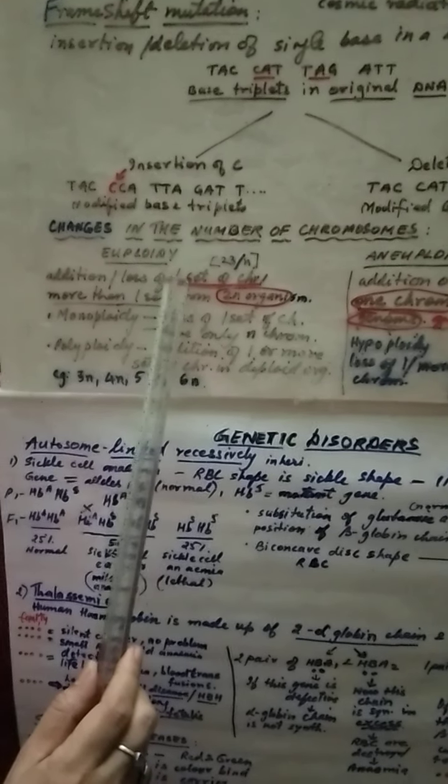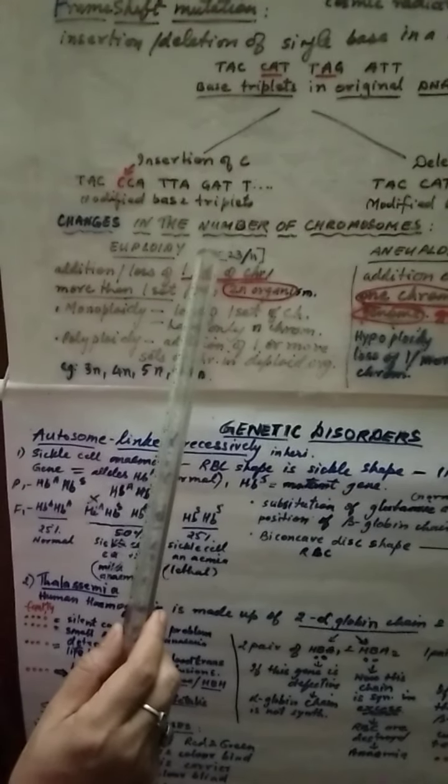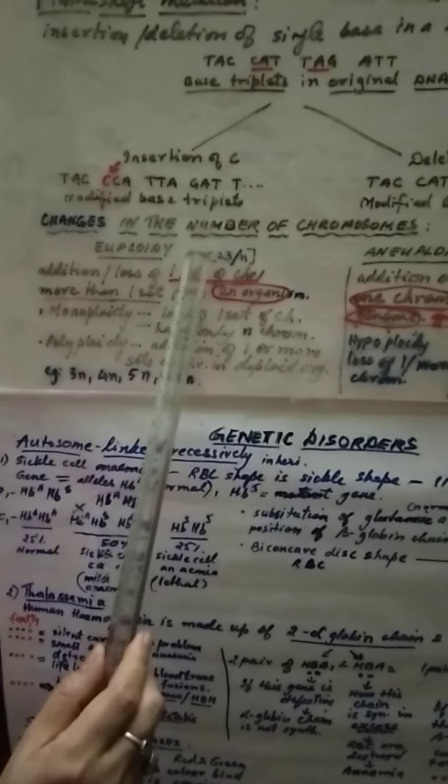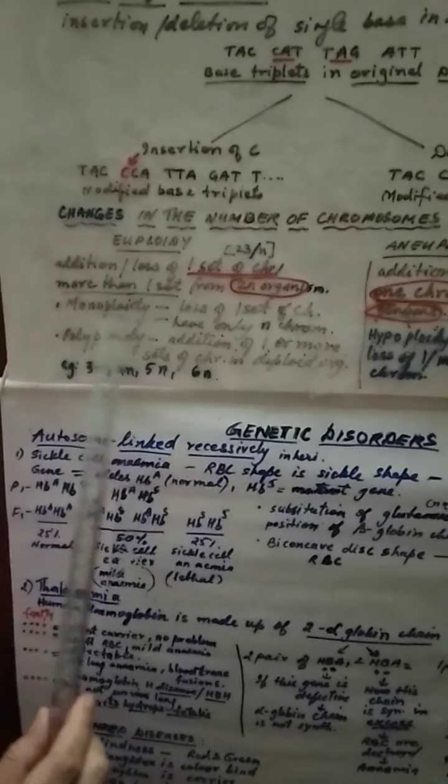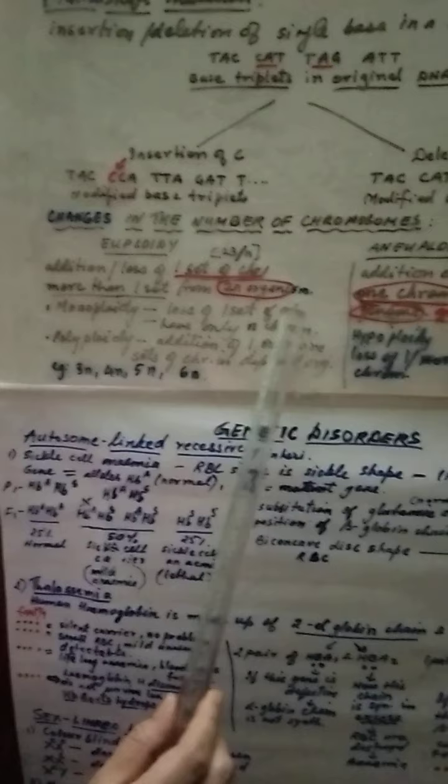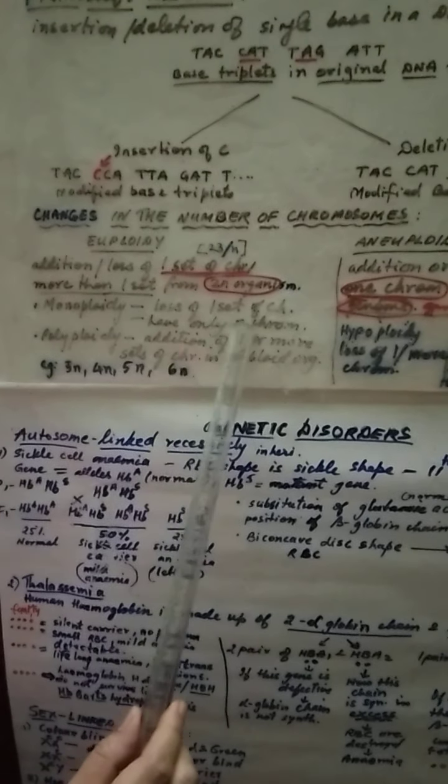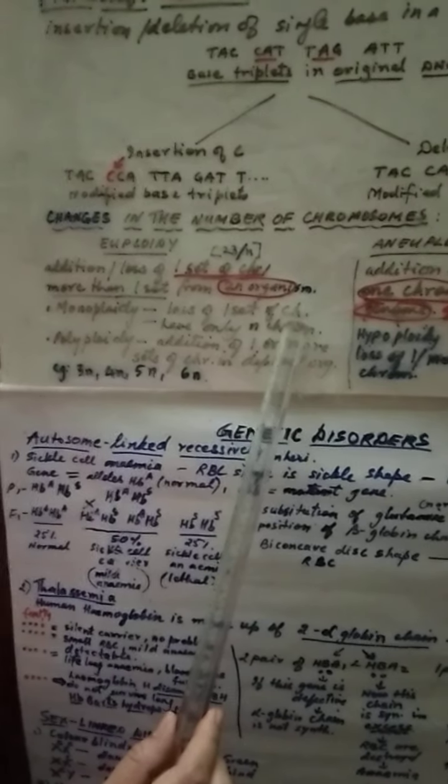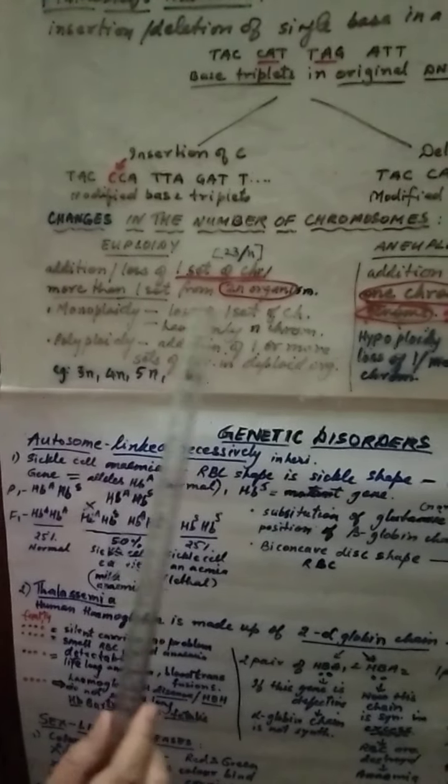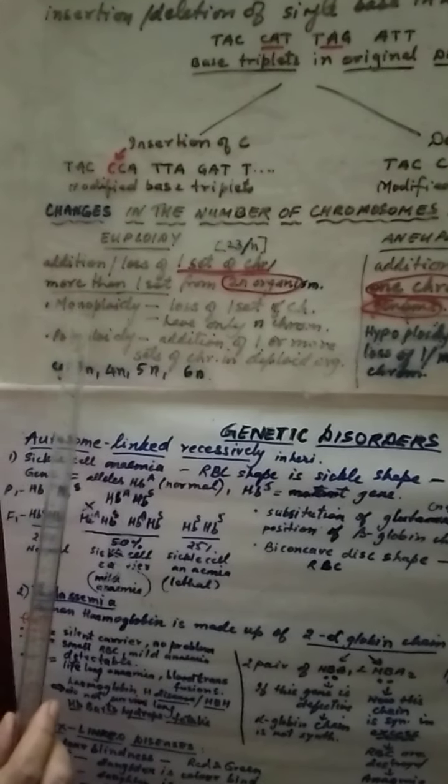What is one set? One set means 23 number of chromosomes. Suppose there is a loss of one set of chromosome and they have only now N number of chromosomes, that is half number of chromosomes. Such type of condition is called monoploidy.